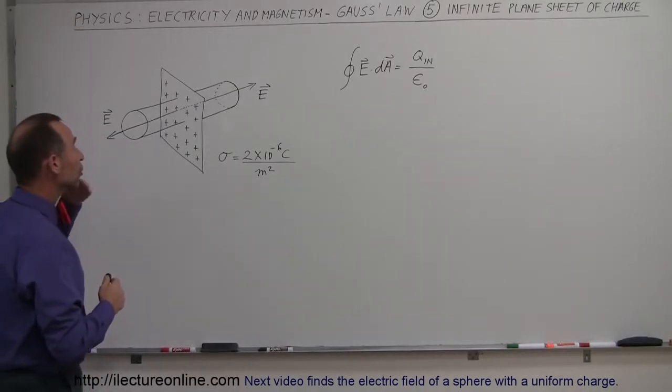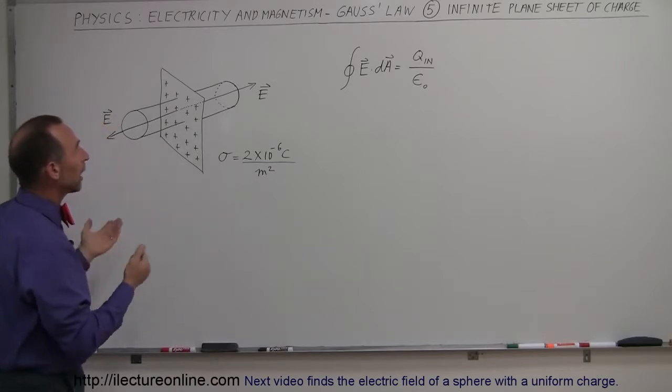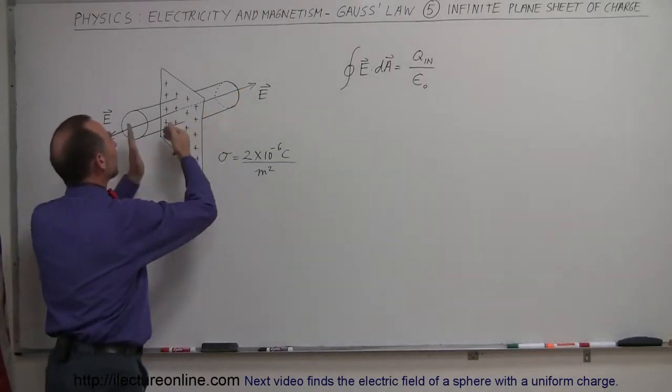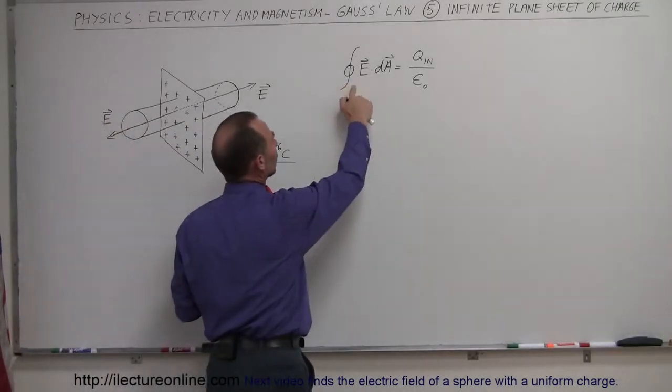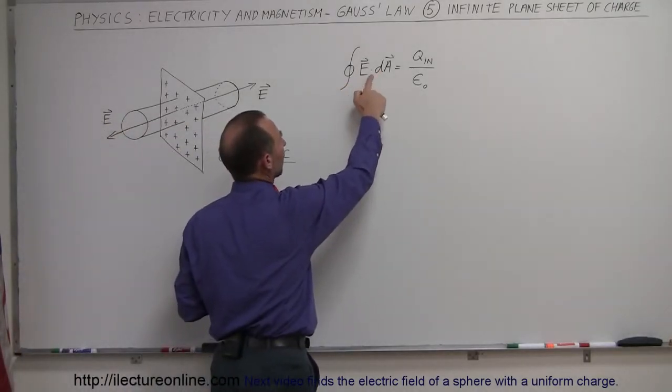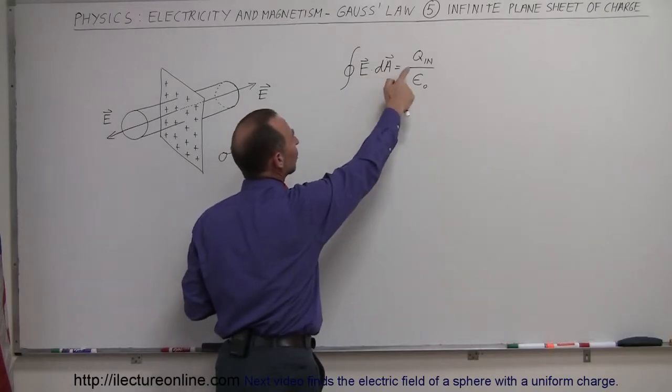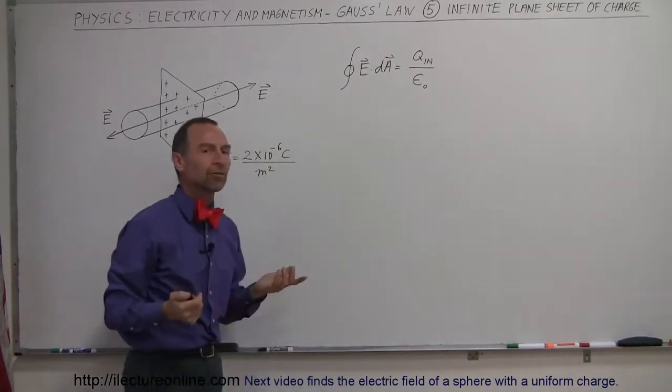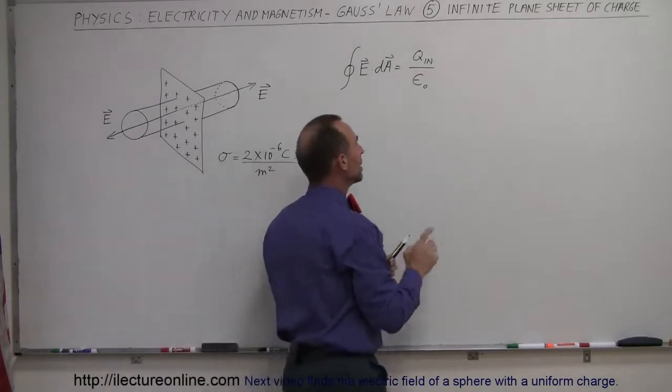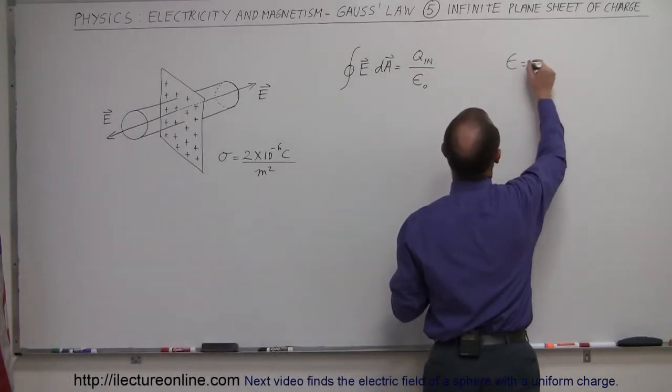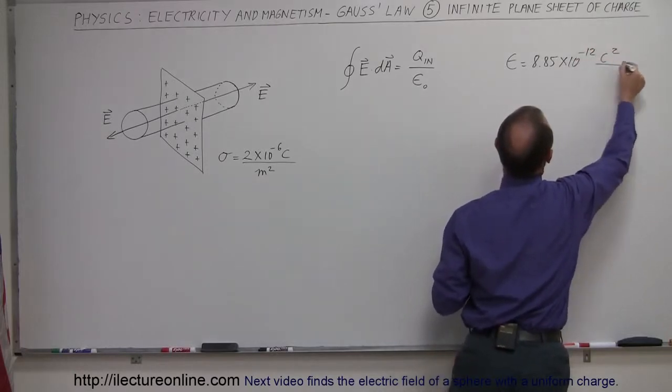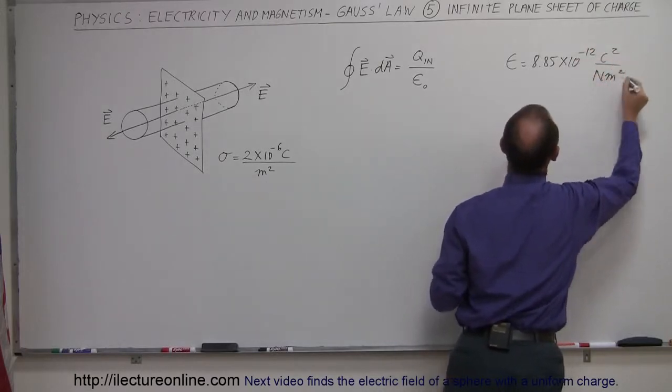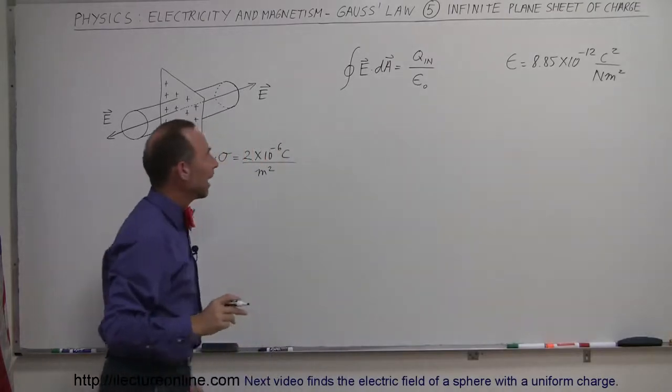All right, so we're going to use Gauss's law to find the electric field emanating from both sides of the sheet. The equation is that the surface integral of the electric field strength times the area equals the q inside divided by epsilon sub nought. Epsilon sub nought of course being the constant of 8.85 times 10 to the minus 12 coulombs squared per newton meter squared. So how do we do that?